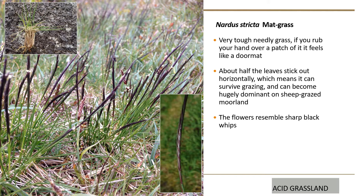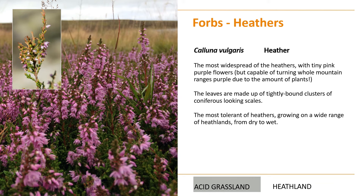If you have mat grass in flower, the flowers resemble sharp black whips — very fine, very black and glossy. Nothing really like that at all. So those are three key grasses to look out for in both habitats, though mat grass is much more associated with acid grassland than heath. You will sometimes find it in open areas amongst heather.